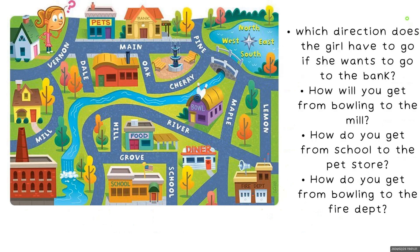Which direction does the girl have to go if she wants to go to the bank? Here is the girl, and this is the bank. She needs to walk right.